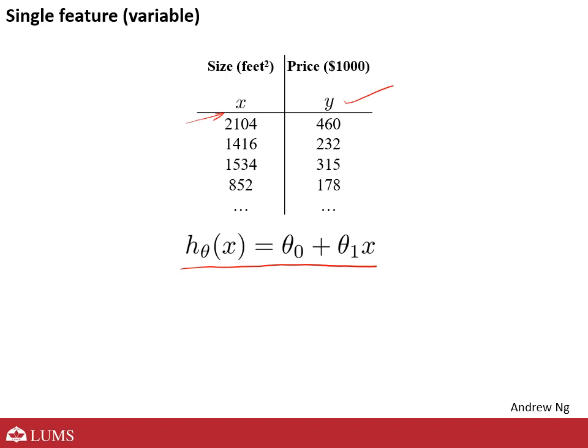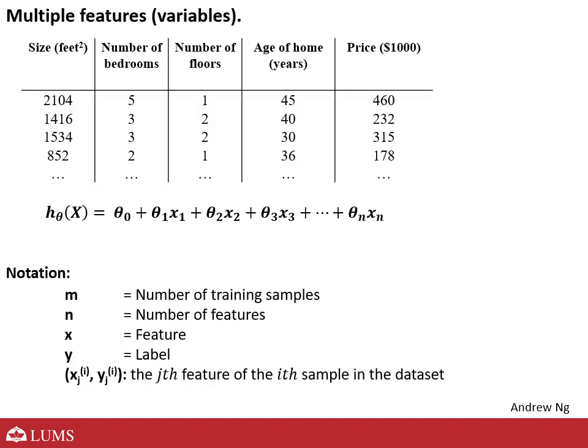So now we have the case where we have more features. We can obviously have a lot of features — for example, you have size, but you also have the number of bedrooms. You can also have the number of floors, the age of the house, and so on. In a house, you can define hundreds of features that indicate quality.